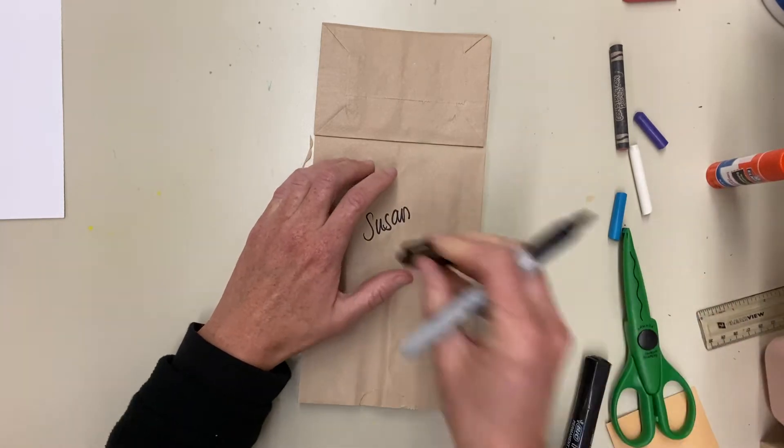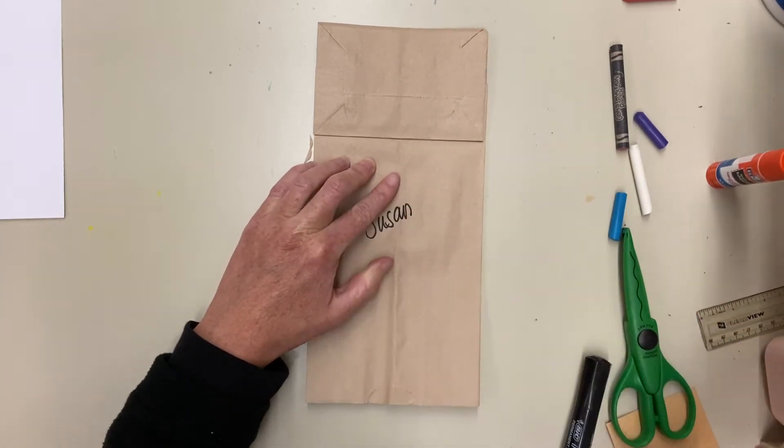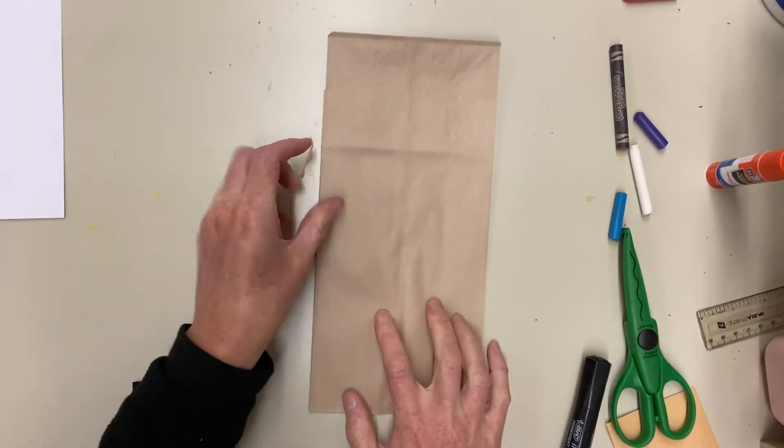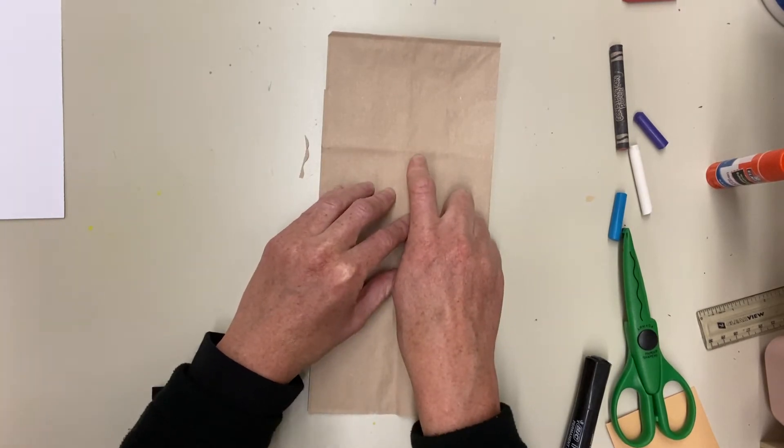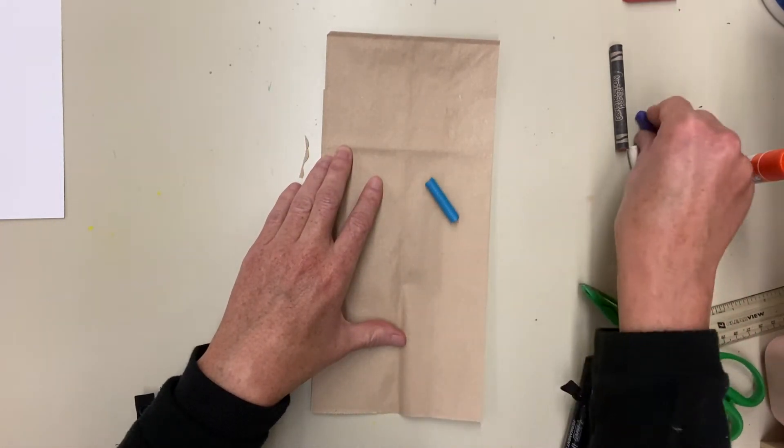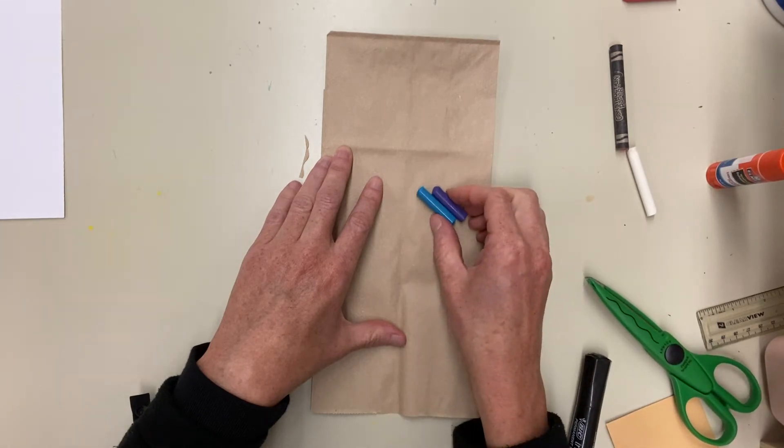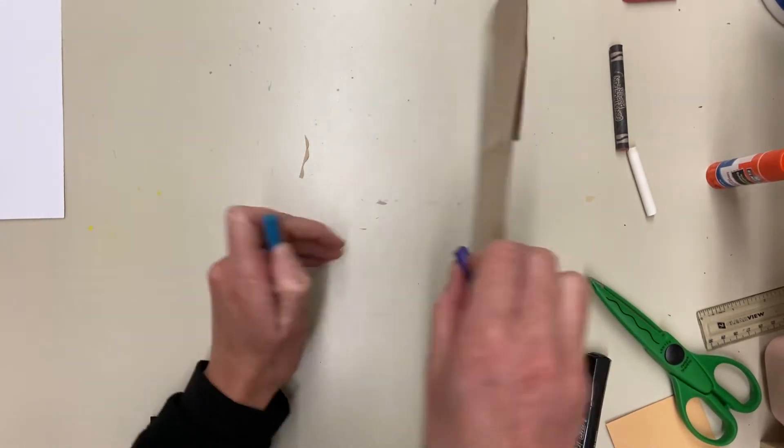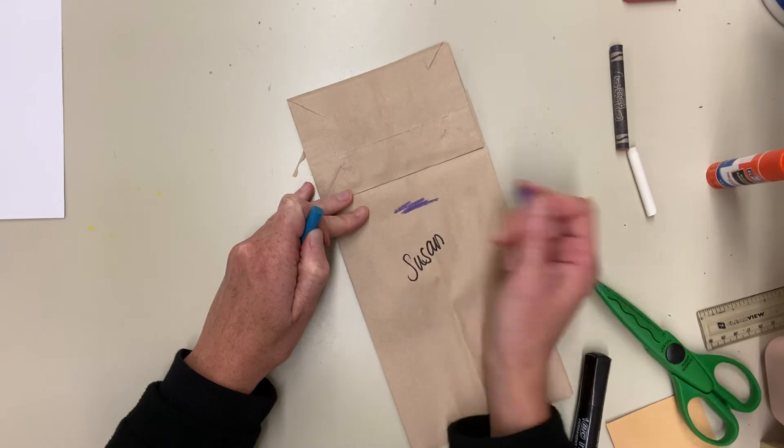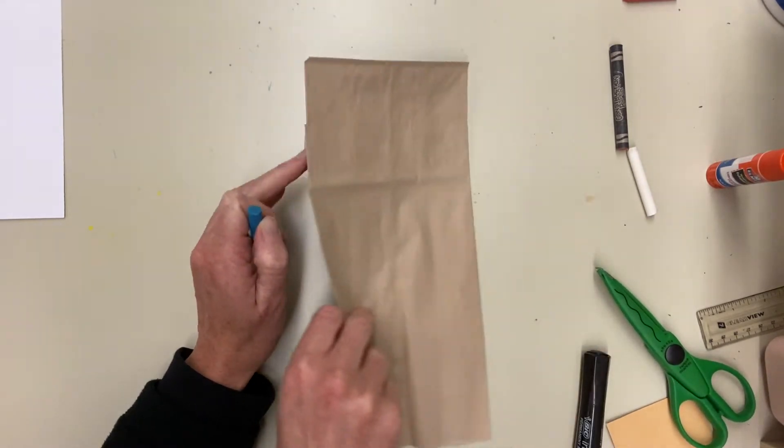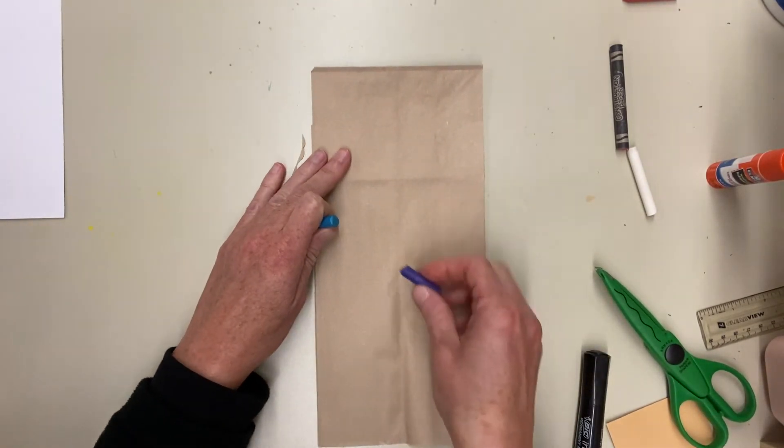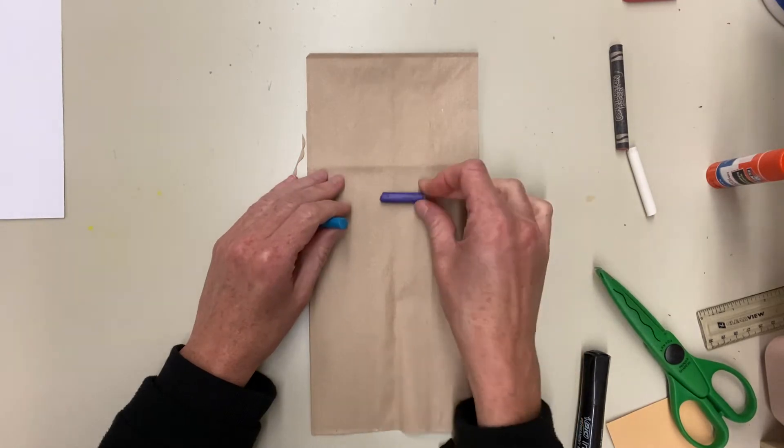And then I'm going to turn my bag over because the side that I'm actually going to color is the side without that. And so I have my crayons here. They all have the paper ripped off of them. I'm not going to color using the tip of the crayon today because this will take a long time. We're going to use the crayon with the paper ripped off the sides.